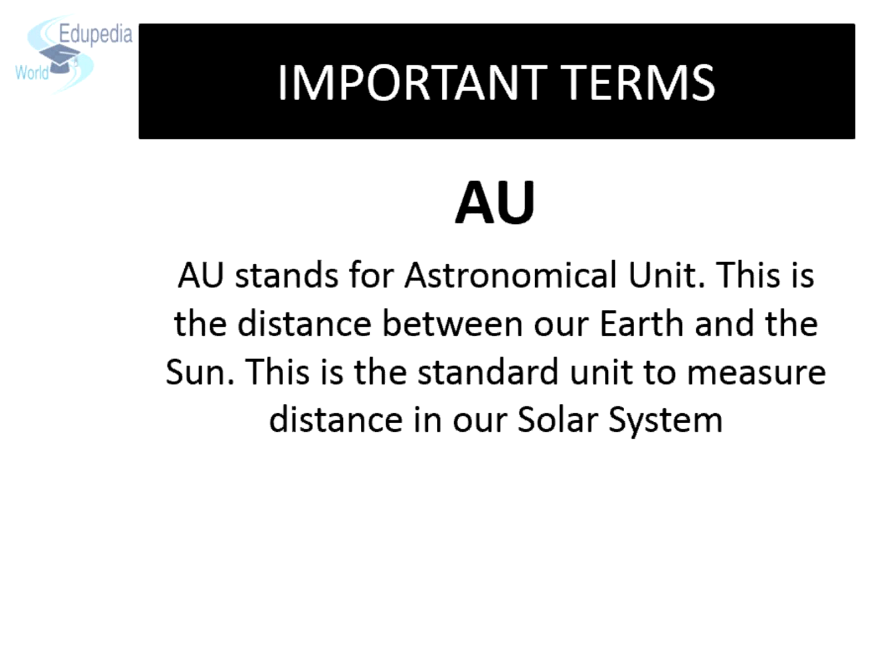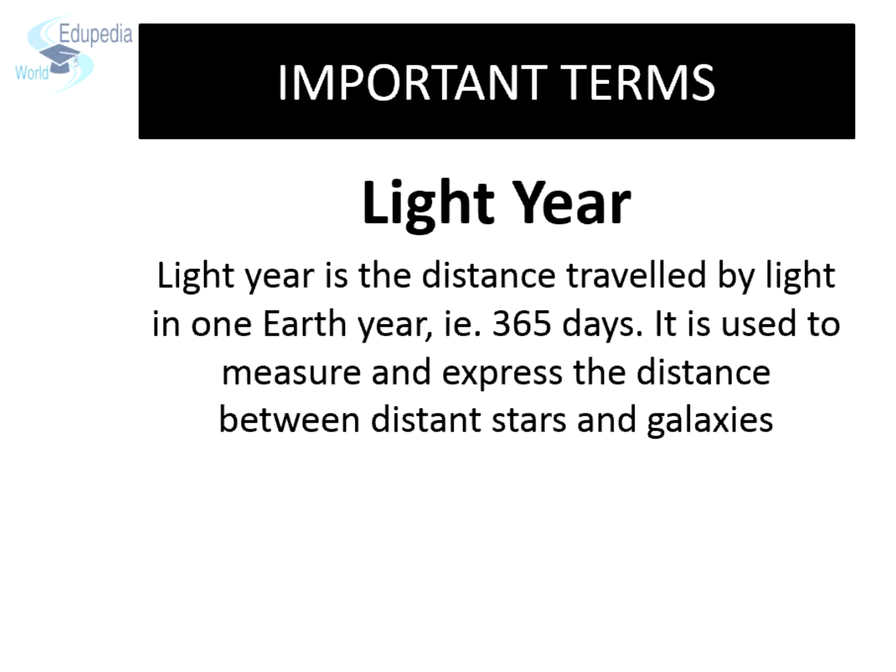A.U. stands for Astronomical Unit. This is the distance between our Earth and the Sun, and is the standard unit to measure distance in our solar system. Light year is the distance travelled by light in one Earth year — that is 365 days. It is used to measure and express the distance between distant stars and galaxies.